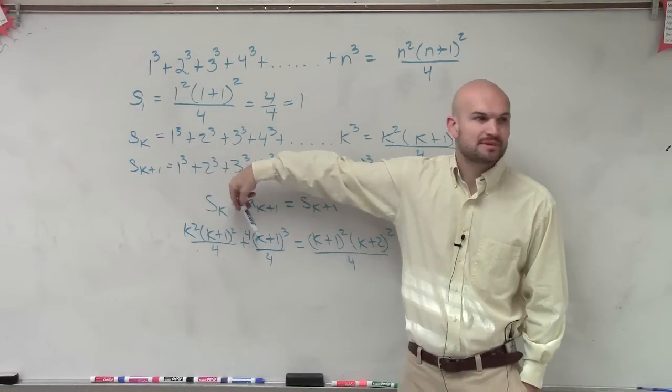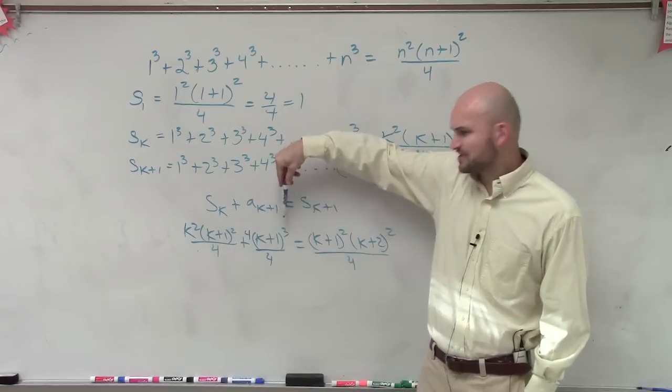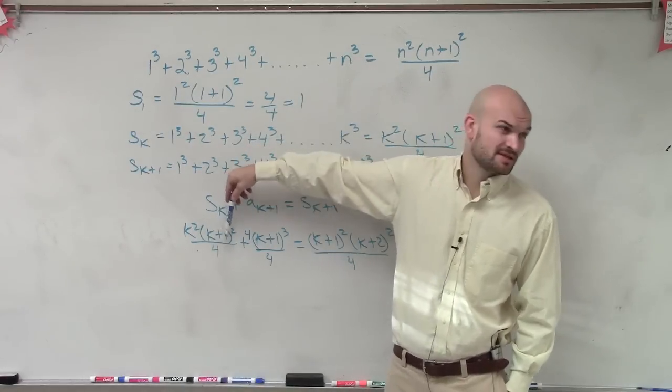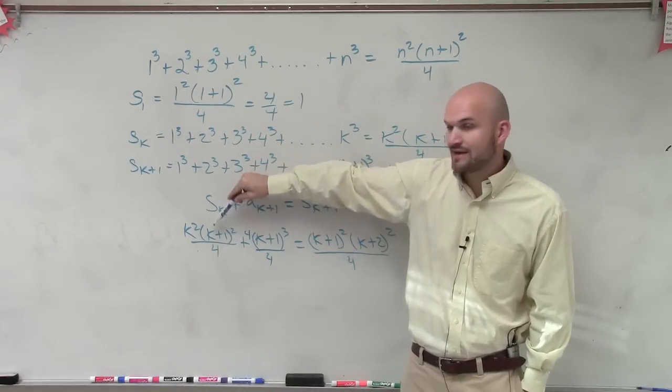And what you can see I can do now is here, you can see these have common terms of k+1, right? Because I really don't want to multiply this out. (k+1)³, that's just not going to be fun. And then multiplying this and then distributing k², it's just not going to be fun, right?